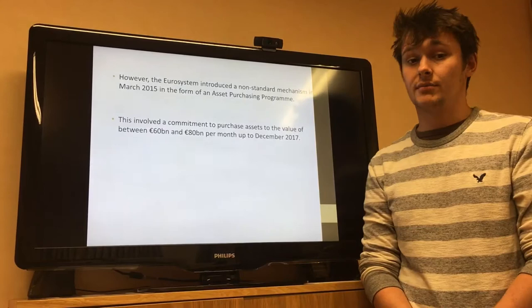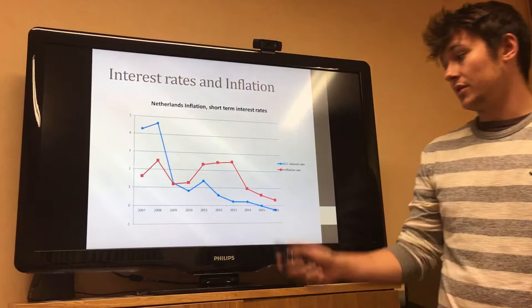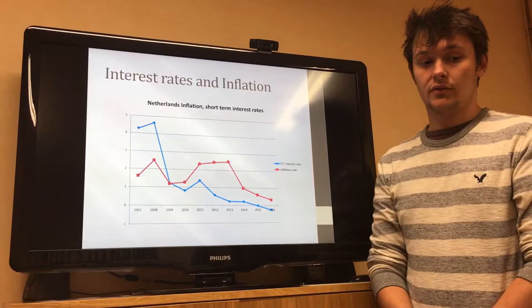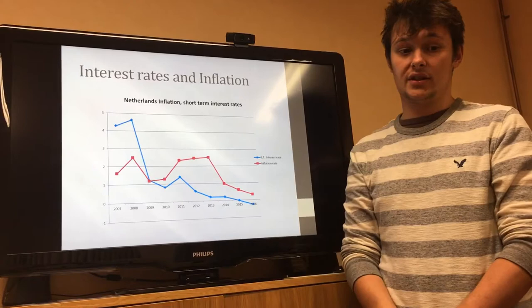Here we see the relationship between interest rates and inflation between the years 2007 and 2016. The blue line represents interest rates over the period. We can see them going from a high rate in 2008 to a relatively low rate, reaching close to zero by 2016.